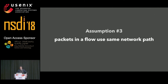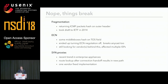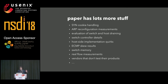If you break the assumption that switches hash identically, you break the assumption that packets in a flow use the same network path. Almost immediately upon deployment we found problems: fragmentation and ICMP packets hash on the outer header — we took a draft on that to the IETF in 2014. ECN was another problem; middleboxes hash on the type of service field, so we ended up turning ECN negotiation off. There's also the case of SYN proxies, where one box negotiates the handshake and offloads the connection to another box using separate network paths.